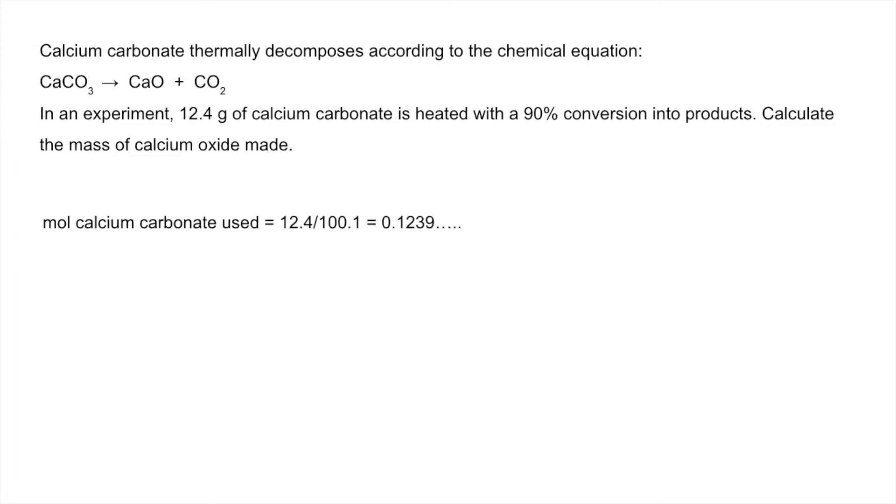Moving to the next one. First, work out moles of calcium carbonate used: mass over Mr. Now bring the yield into play. We know there's a 90% conversion, so we're actually going to make 90% of these moles.